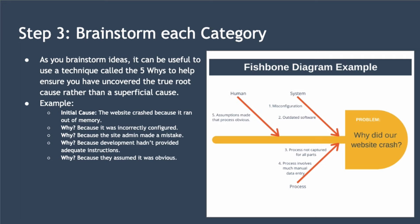Step three is to brainstorm the likely causes a category at a time. As you brainstorm with your team, you're going to generate a list of top-level ideas that may have caused the website to crash. It can be useful to dig deeper into each of these potential causes using a technique called the five whys. The purpose of the five whys is to help you ensure you've uncovered the true root cause rather than just a superficial cause. The technique works by asking why five times. So as an example, suppose we initially thought the website crashed because it ran out of memory.